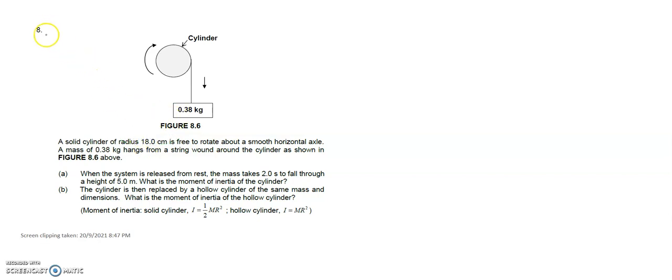Alright, question number eight. They give you a solid cylinder of radius 80 cm, free to rotate about a smooth horizontal axle. A mass of 0.38 kg hangs on the string wound around the cylinder as shown. If it gave 8.6 above when the system is released from rest, meaning u is zero.